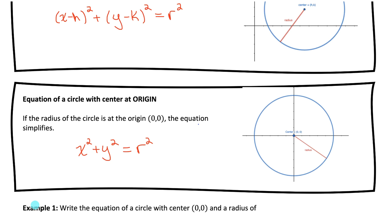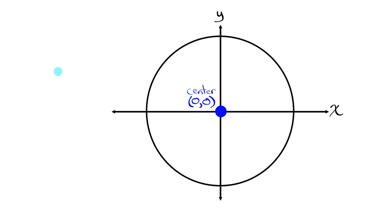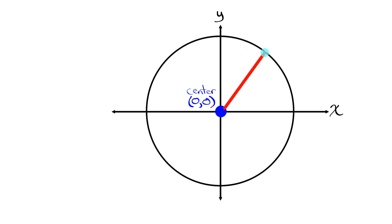Now why do these equations describe the relationship between any XY point and the radius? Let's look at a diagram. Here I have a circle centered at the origin, with the center labeled as point (0, 0). If you imagine drawing a radius from this center to any point on the circumference of the circle, it would connect at some point XY. I'll label this point on the circumference as point XY, and label the radius as r.